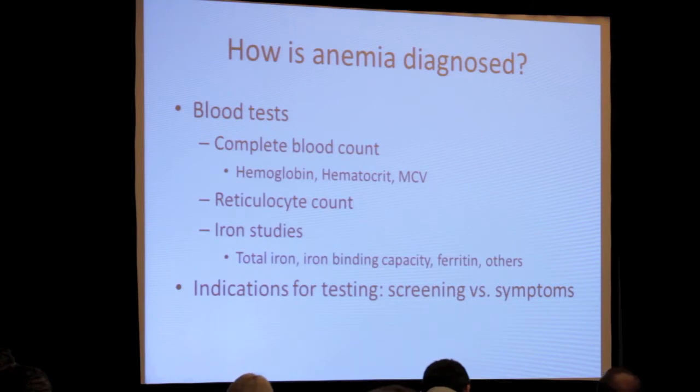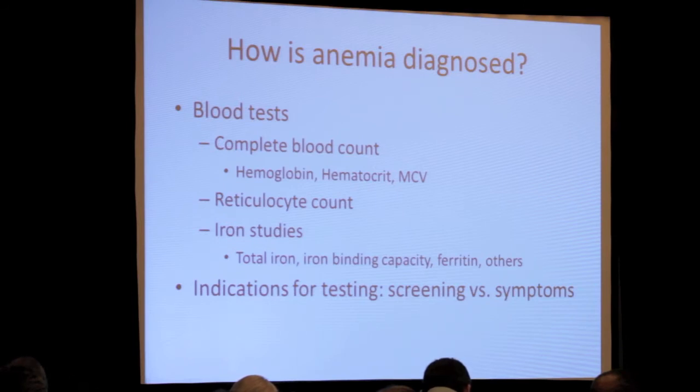These are all just hints, and really the way anemia is diagnosed and confirmed is through blood tests — there is no way to get around that. The tests we typically order include the complete blood count, specifically the hemoglobin, hematocrit, and MCV, which tell us whether you are anemic. The reticulocyte count tells us whether your bone marrow is making new red blood cells — when it's high, that shows the bone marrow is working hard to make more. We also look at iron studies, which tell us how much iron your body has and help indicate the type of anemia.